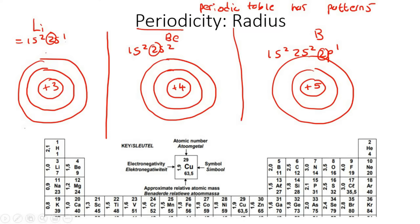Now, electrons are negative — we know that. The nucleus is filled with protons; it also has neutrons, but those don't have any charge. So the overall effect of the nucleus is that it's positive. Think of these nuclei as a powerful machine with a positive magnetic charge that's busy pulling on all of the electrons going around it.